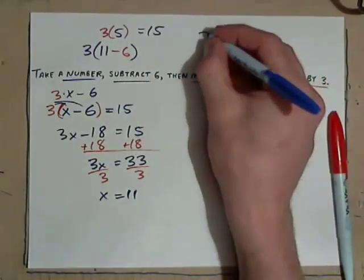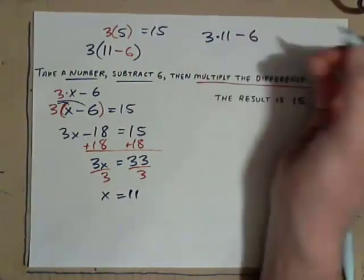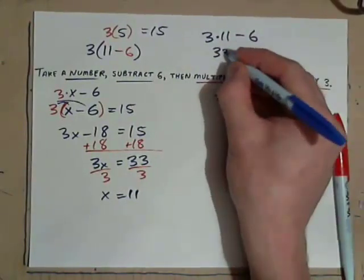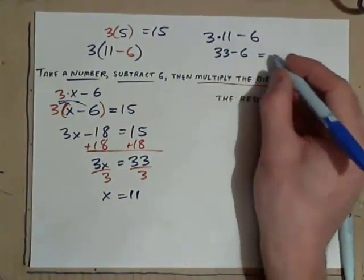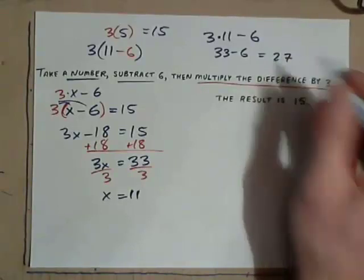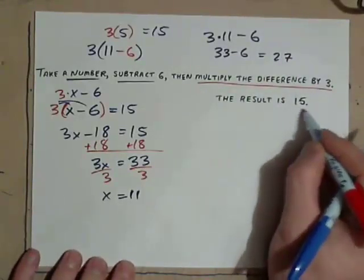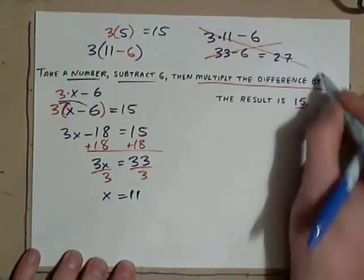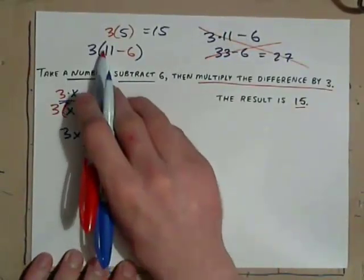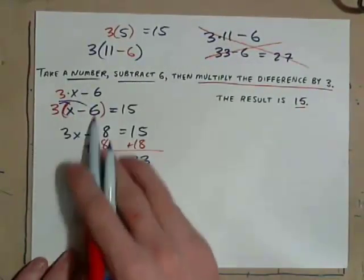What would be incorrect is just go 3 times 11 minus 6 without parentheses, because that would be 33 minus 6, which would give us 27. So, this would not give us the 15. So, that's obviously incorrect. So, you do need parentheses around the 11 minus 6, or the x minus 6.